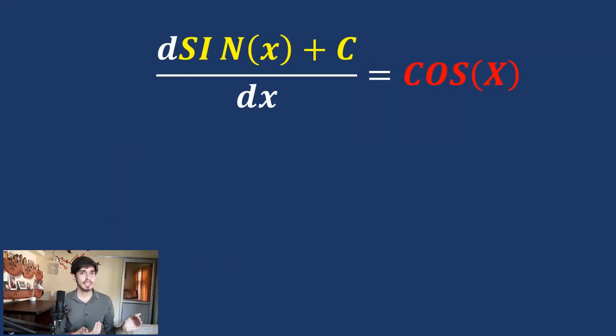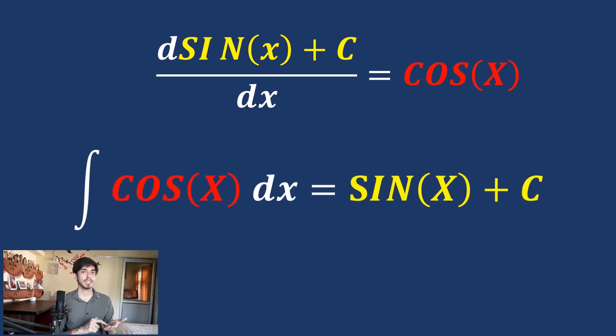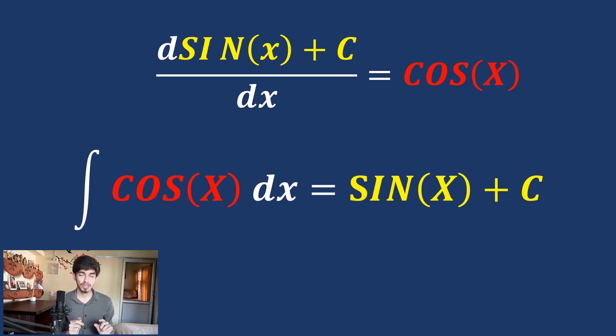But I just missed something. The differentiation of a constant is always zero. So if I differentiate sin x + c, I will also get cos x. Therefore, the integration of cos x is not just sin x — it is sin x + c. This constant is really important in indefinite integrations, and many students forget to add it and get the answer wrong. Always remember to add this constant. Since this constant is not yet determined, this integration is called indefinite integration.